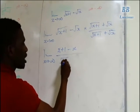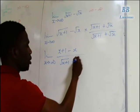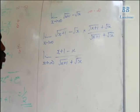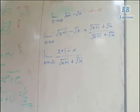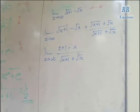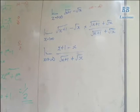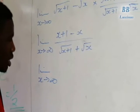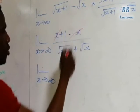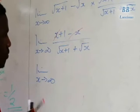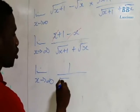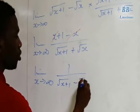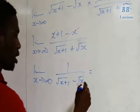After rationalization and simplification, the numerator reduces to 1, and we are left with limit as x tends to infinity of 1 over (√(x+1) plus √x). As x tends to infinity, this expression tends to 0, which is our final answer.